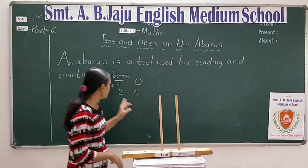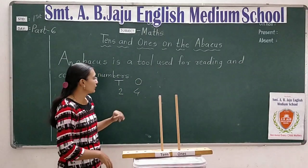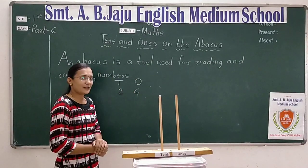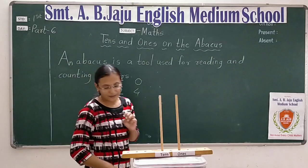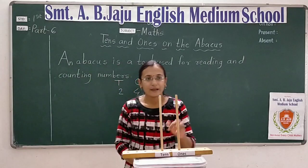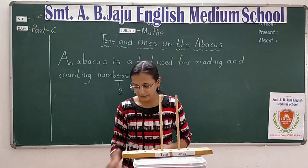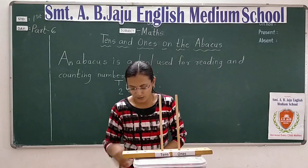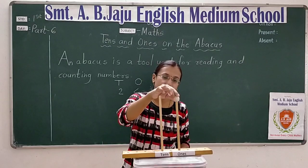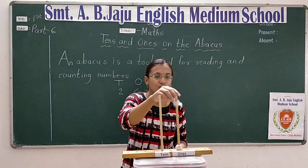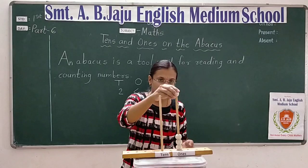Okay? Aap ka number kya hain? Twenty-four. Number twenty-four. Abhi ones place mein konsa number hai? Yes, four. So, ones place ka rod hai, usme four beads daalenge. Kitne beads daalenge? Four. Okay? One, two, three, four.